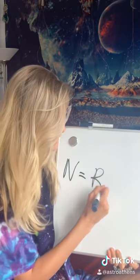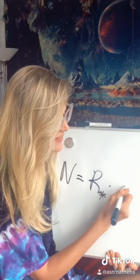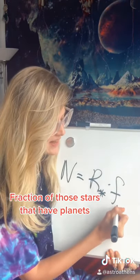It starts by looking at the rate in which stars are forming within the Milky Way galaxy and multiplies that by the fraction of those stars that have planets in them.